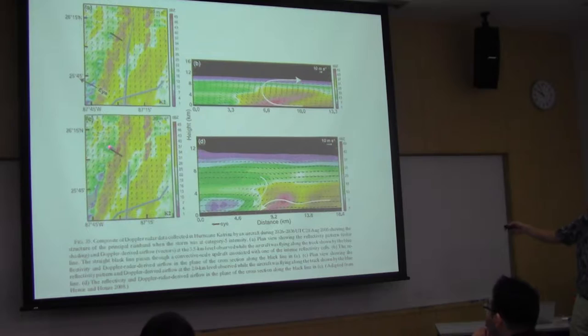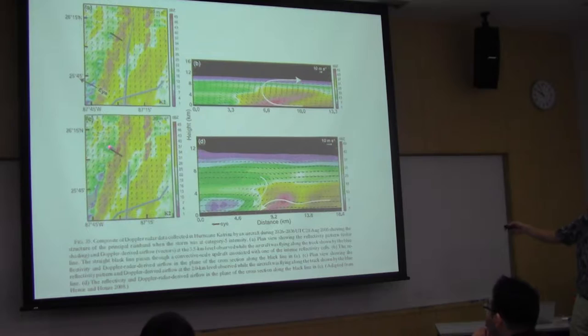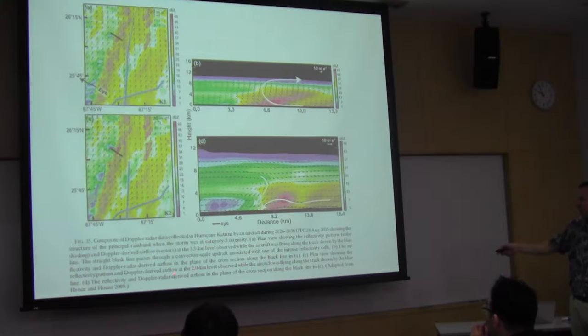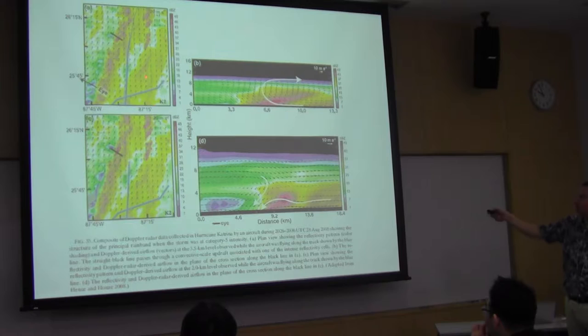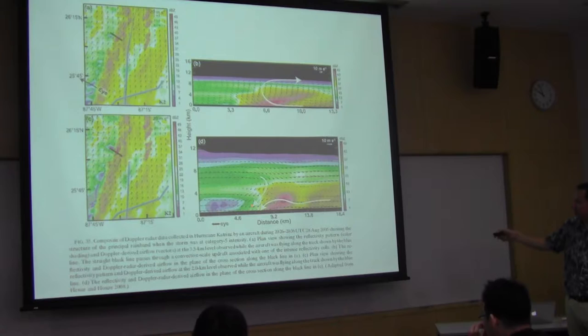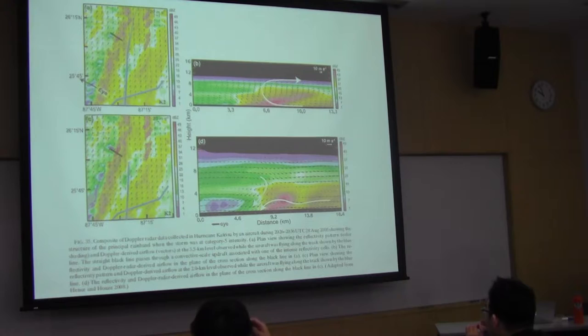This is about 10 minutes worth of data here. This is the 2-kilometer level, and this is at the 3.5-kilometer level. Take another cross-section at a slightly different spot—you can see this other type of circulation that Gary talked about, this outflow here, and then this descending branch on the inside edge. We've used the airborne radar data to say a lot of really interesting things about rain band structure.